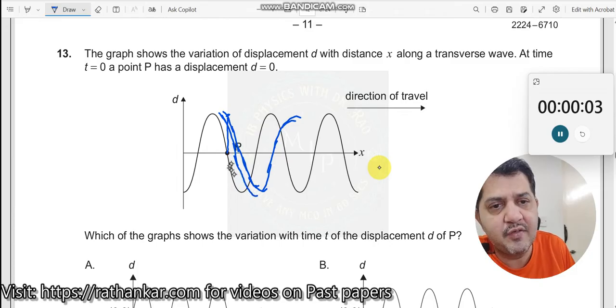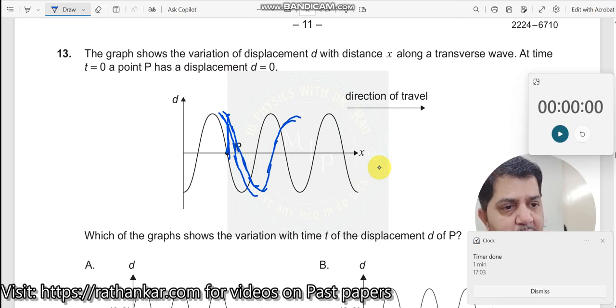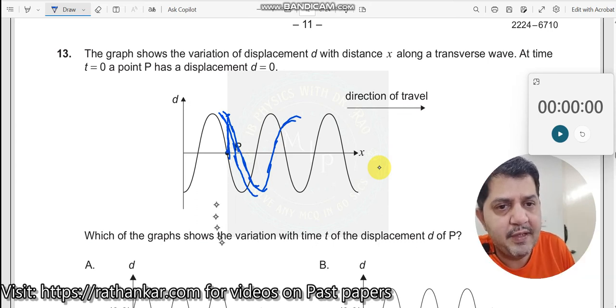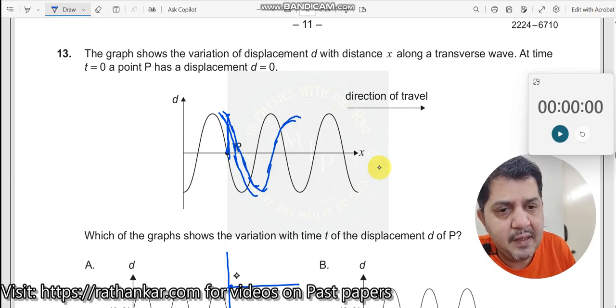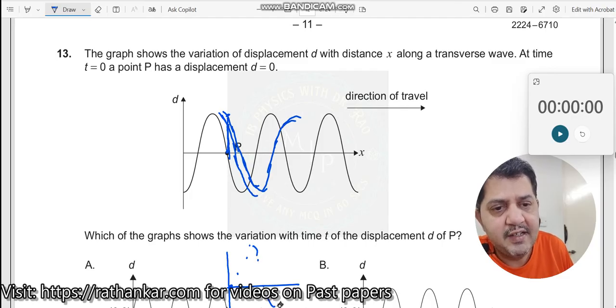So initially the point would have been here, then the point would have been here. I'll draw it separately. Initially the point would have been here. After some time, the point would have gone here. After some time, the point would have gone here. After some time, the point would have once again gone here, and then it would have described like this. So as a result, if I join all these points,